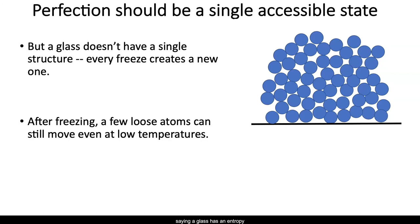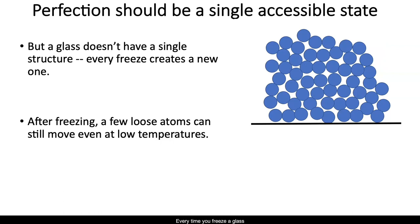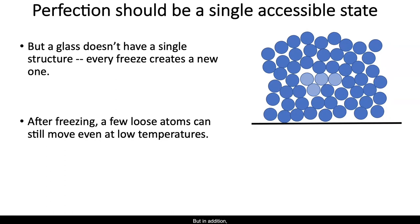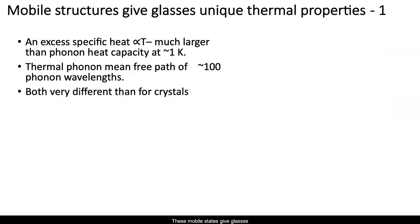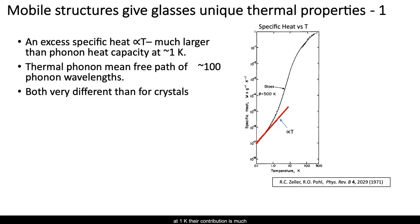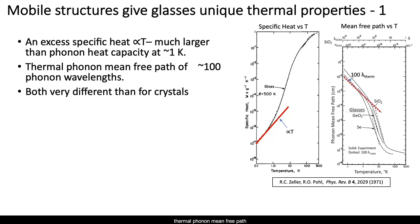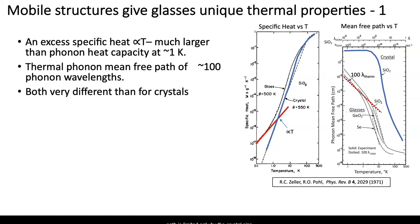Well, saying a glass has an entropy equal to a crystal suggests to me that it has only one structural state, which the usual glasses don't have in any normal sense. Every time you freeze a glass, you get a different one. But in addition, ordinary glasses have multiple accessible states so that after freezing, a few atoms can still move even at very low temperatures. These mobile states give glasses a unique set of low-temperature properties: a specific heat proportional to temperature. At 1 K, that contribution is much larger than the phonon specific heat. There's a phonon scattering that limits the thermal phonon mean free path to about 100 phonon wavelengths — very different than that observed for crystals, where phonons account for all the specific heat and the phonon mean free path is limited only by the crystal size.